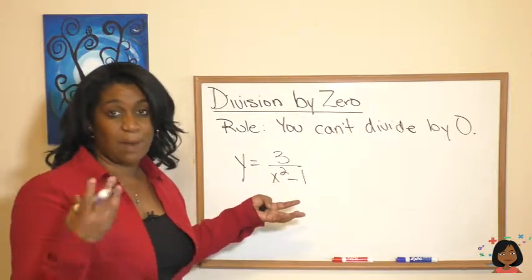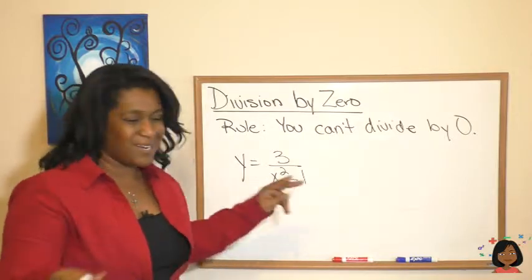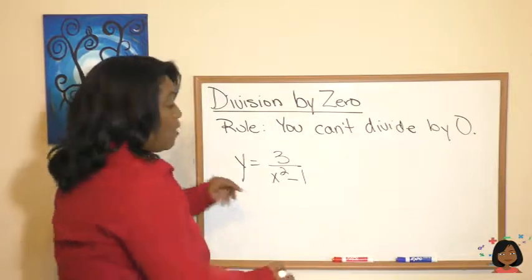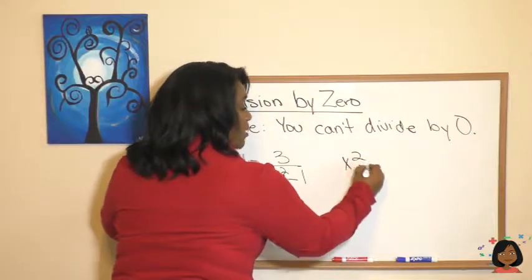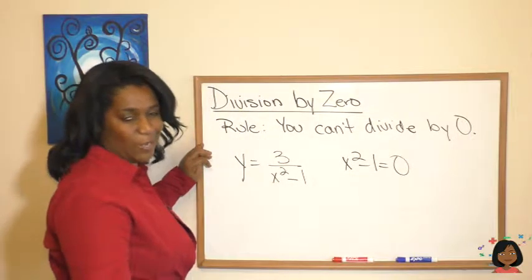We have to figure out what number can this not work—where zero will be on the bottom. So what's the number where x will give us a zero, and that just cannot work? Let's solve for zero. We're going to do x squared minus one equals zero, and whatever we get for x, we know is a number it cannot be.